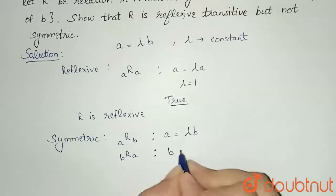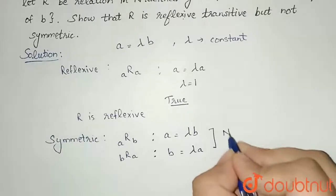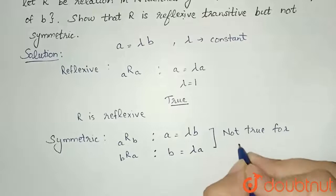And if b is related to a, then it should be b equals lambda times a. But this is not true for all N.